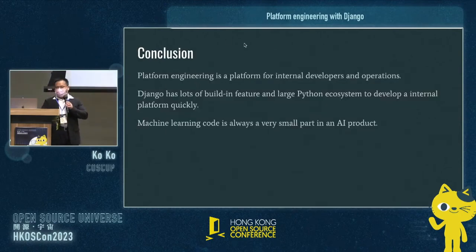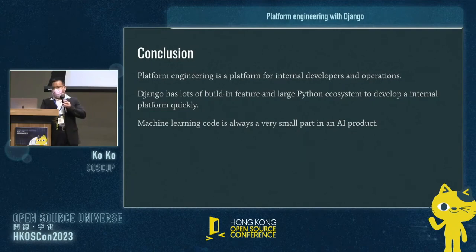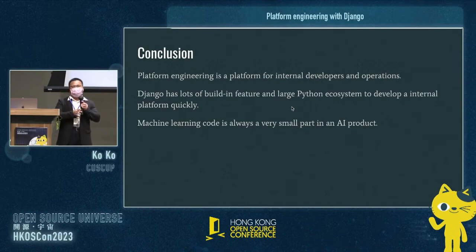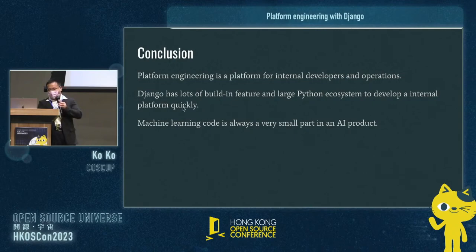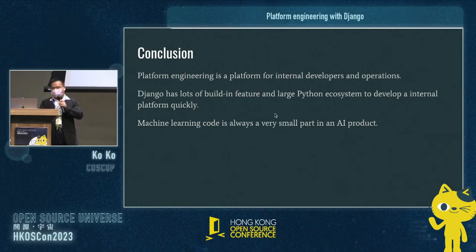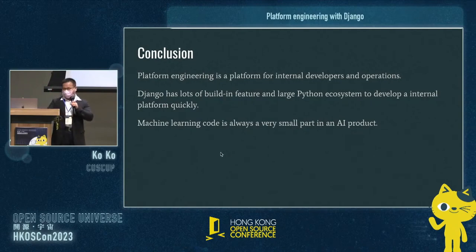In conclusion: platform engineering is a platform for internal developers and operations. Django has lots of built-in features — for example, the admin system lets you build admin interfaces easily — and a large ecosystem including DevOps SDK, Azure IoT SDK, and AI libraries. It's easier to develop an internal platform quickly with Django. Also remember that machine learning code is always a very small part of an AI project — infrastructure serving, data collection, and monitoring are all larger parts. So if you want to run a machine learning project, machine learning code itself may not be the most critical piece.